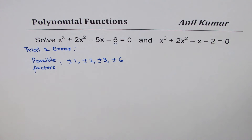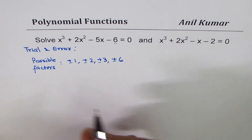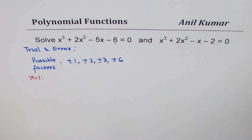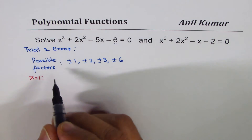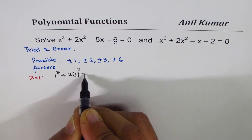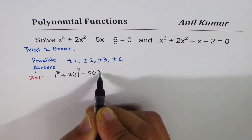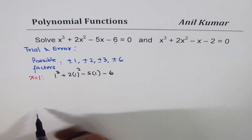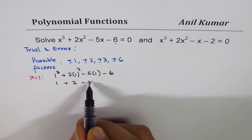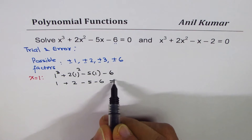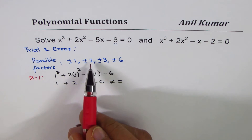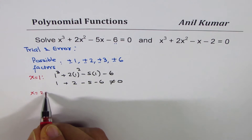We try x = 1, 2, 3 in sequence. Substituting x = 1: 1³ + 2(1²) - 5(1) - 6 = 1 + 2 - 5 - 6, which is clearly not equal to 0. So x = 1 is not a factor.